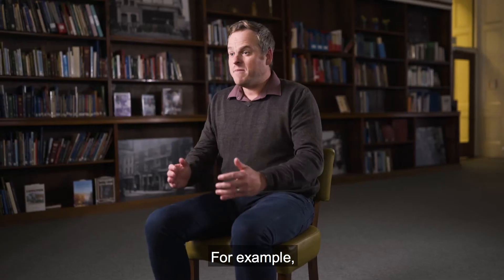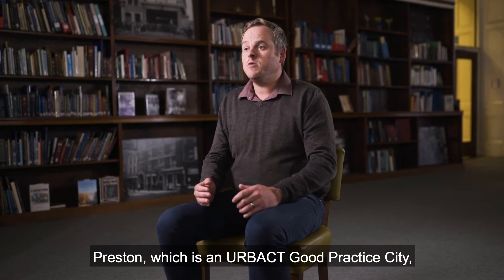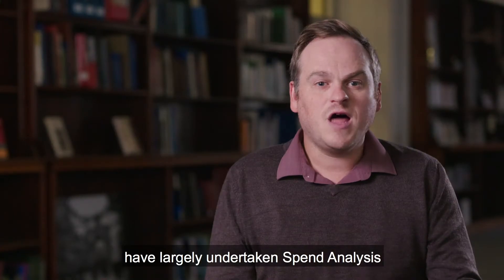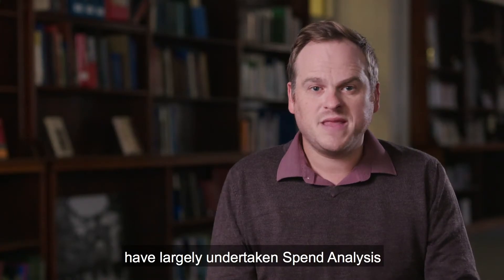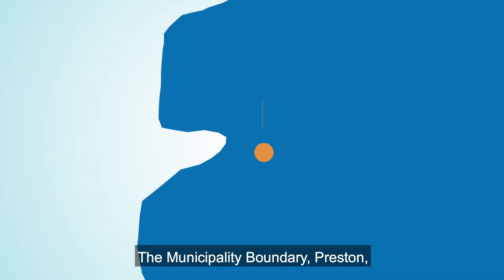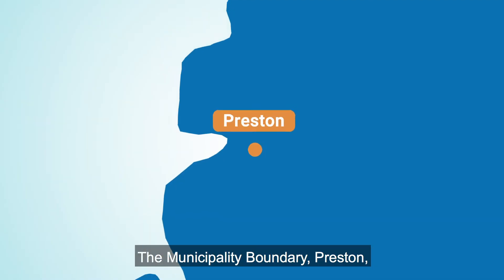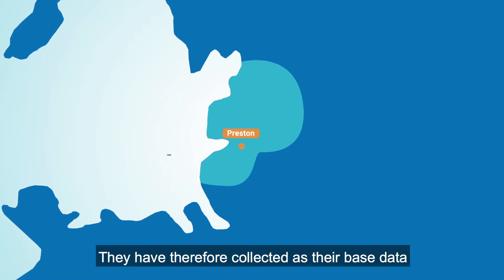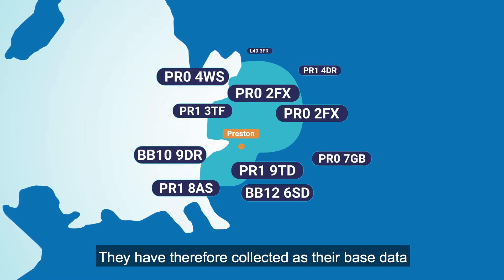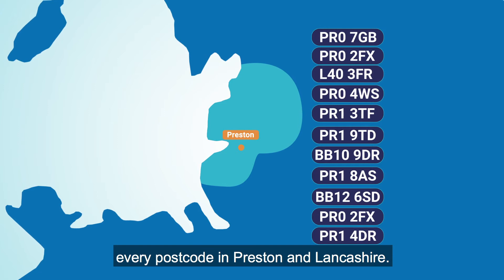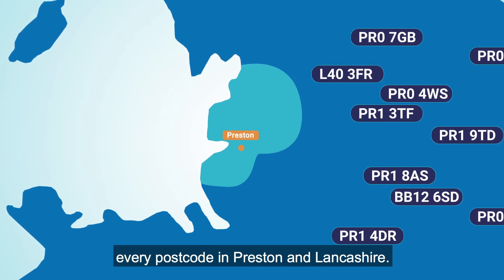For example, Preston, which is an URBACT good practice city, have largely undertaken spend analysis at two geographical levels: the municipality boundary, Preston, and the wider region, Lancashire. They have therefore collected as their base data every postcode in Preston and Lancashire.